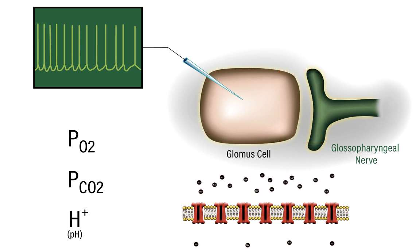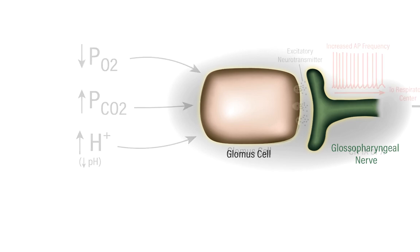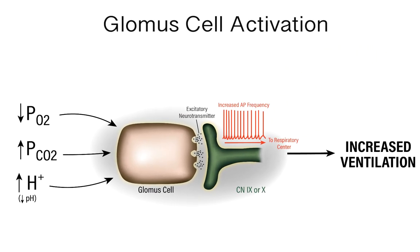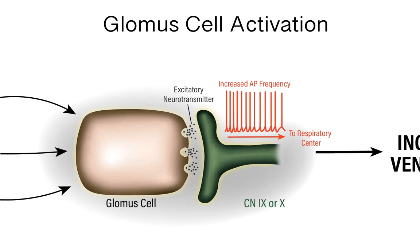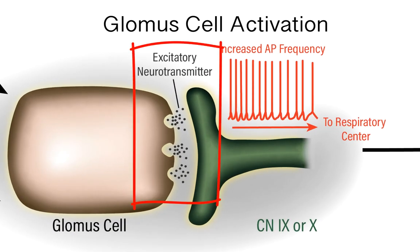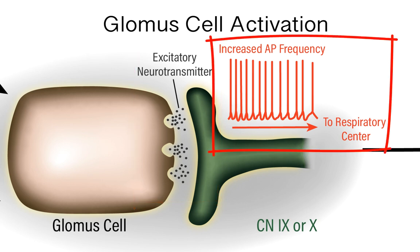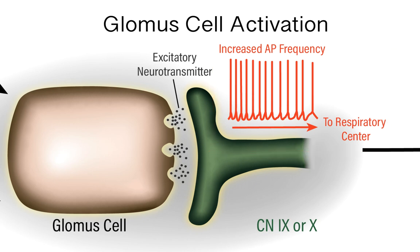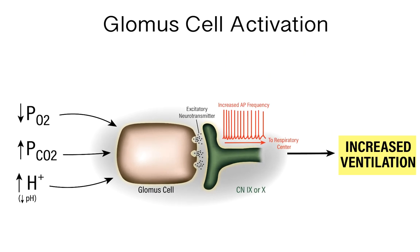The following changes lead to an increase in glomus cell excitability: a decrease in the partial pressure of oxygen, an increase in the partial pressure of carbon dioxide, and an increase in proton concentration. These factors result in an increase in action potential frequency from the glomus cells, resulting in increased neurotransmitter release onto the cranial nerve, producing an increase in action potential frequency of those cranial nerve afferents.